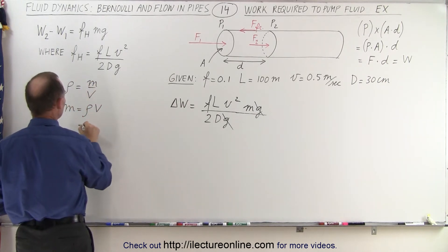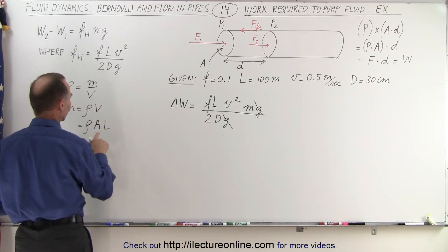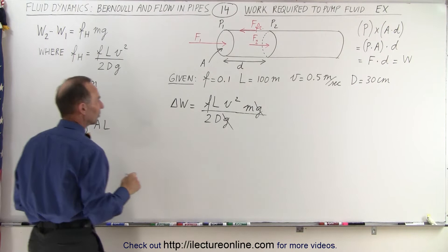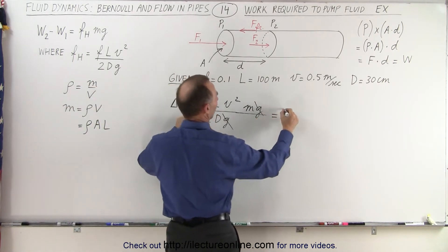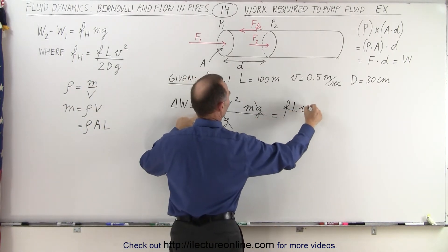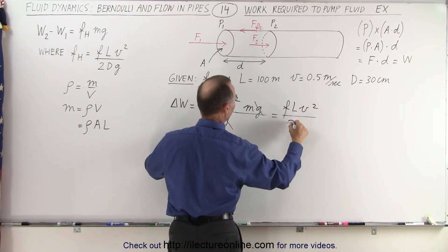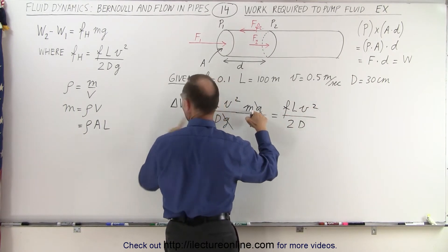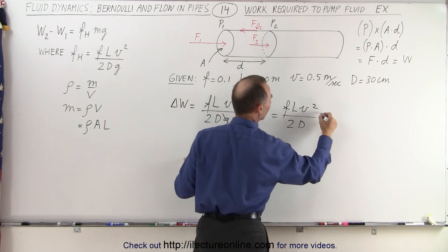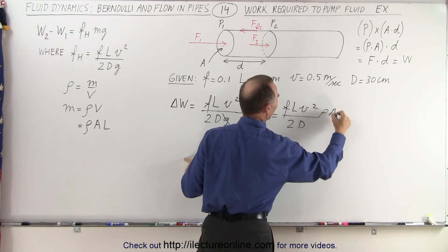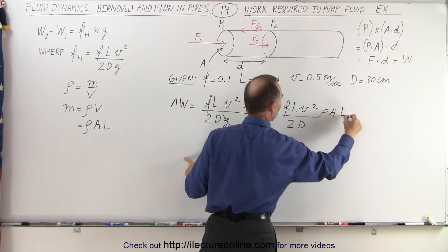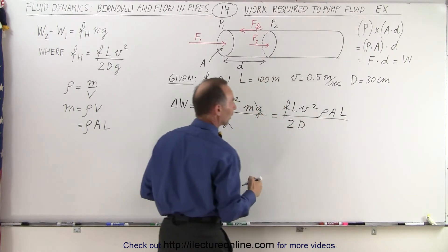So in this case, that would be equal to the density times the cross-sectional area times the length. Let's go ahead and plug that in there for the mass. And so this can then be written as, we have F L V squared divided by 2D, instead of M, we're going to write the density times the area times the length.